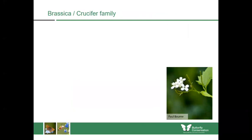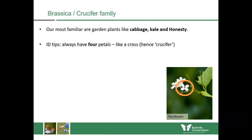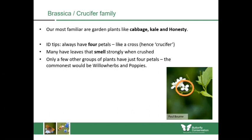We'll be meeting many different plant families. The first is the brassica or crucifer family — common examples include cabbage, kale and honesty. A good identification tip is that the flowers always have four petals arranged like a cross, hence the name crucifer. The leaves often smell strongly when crushed. Be aware though that some other plant families also have four petals, including willowherbs and poppies.